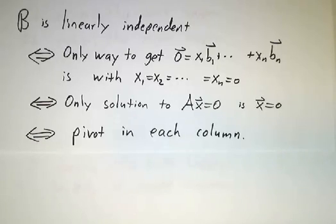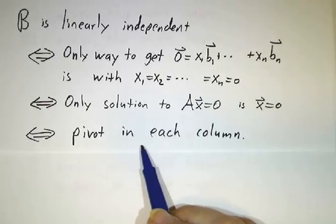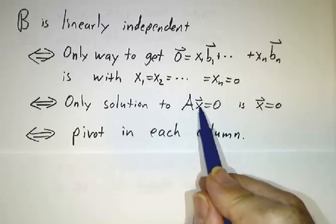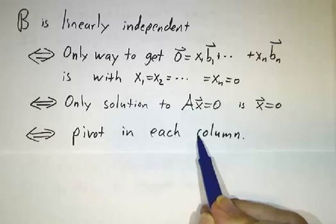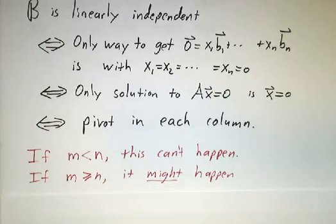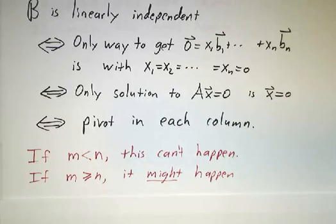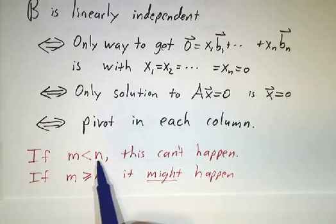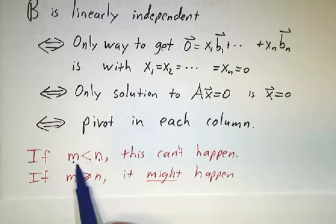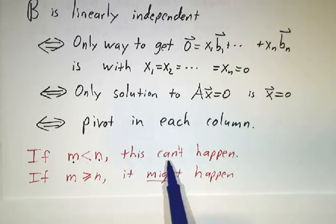And you get non-trivial solutions if you have free variables. So you have only the trivial solution if there's a pivot in each column. And if you have too many vectors, if you have more vectors than the size of your space, like if you have five vectors in R^4, then this can't happen.